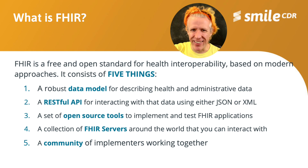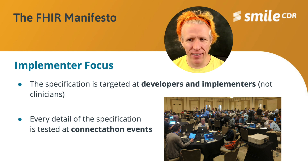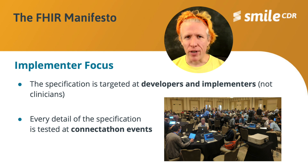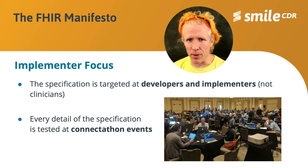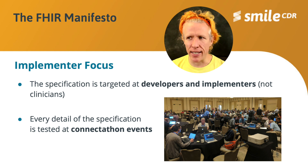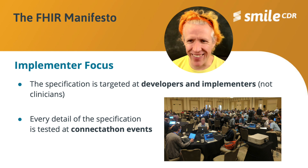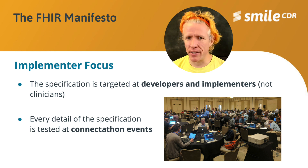In terms of what makes FHIR different: one of the primary aims of FHIR was to not repeat the mistakes of the past, which led to the creation of something called the FHIR manifesto — a set of guiding principles that, especially in the early days of FHIR's creation, were really key in decision making in order to achieve a standard that could be implemented quickly, as conveyed by that word 'fast' at the start.